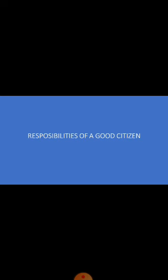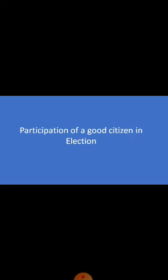Another responsibility is caring for public and private properties. Public property means the property or things provided by the government to the people. Private property includes our own homes, utensils, and furniture - which we protect safely. Similarly, we have to take care of public places such as hospitals, schools, public transport, historical monuments, places of worship, roads, and parks. These are all properties provided by the government for us to enjoy.